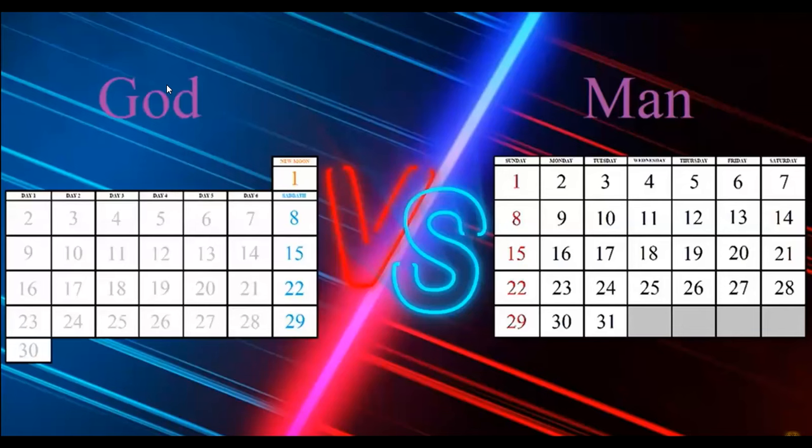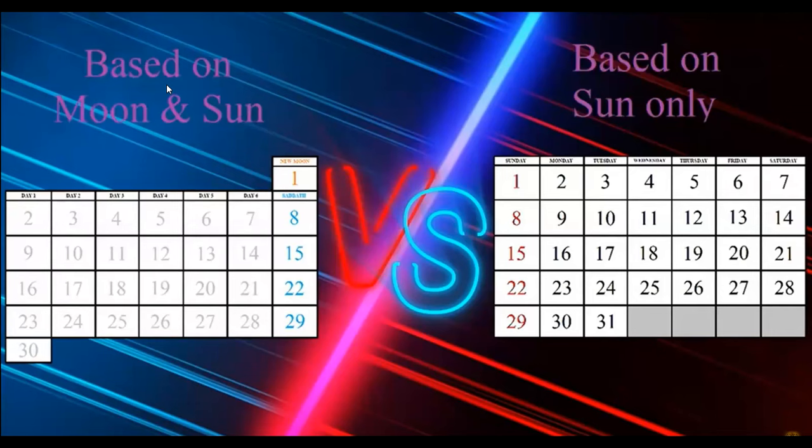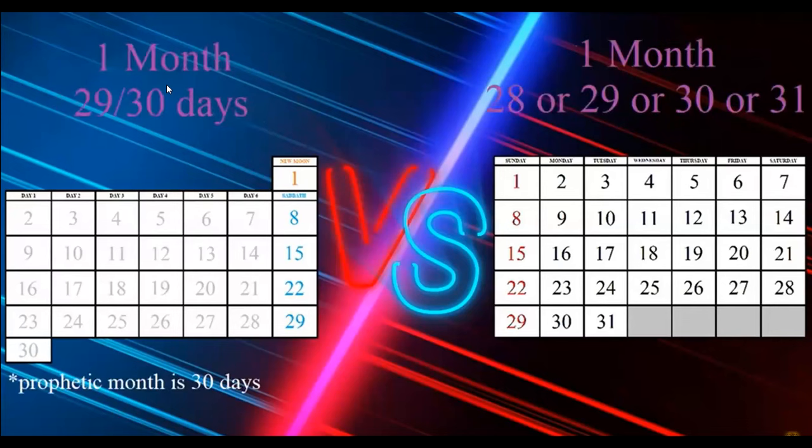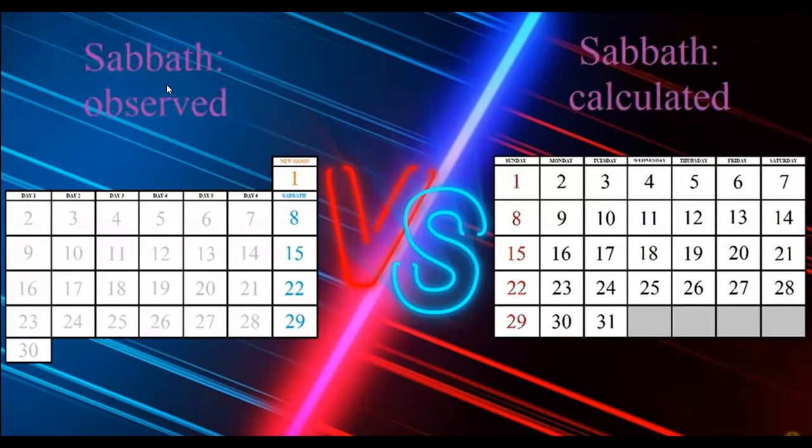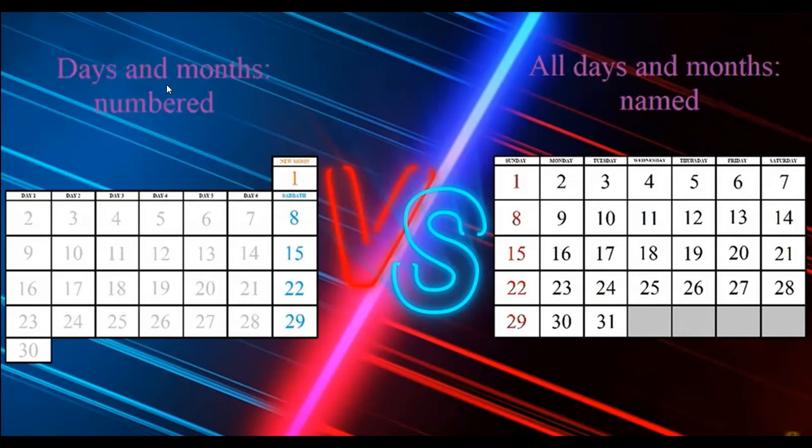Now what I would like you to do is make a choice: do you follow what God created or what men fabricated? Lunisolar calendar comes directly from the Bible while Gregorian simply does not. Biblical calendar is based on moon and sun, but Gregorian calendar is only synchronized with the sun. Biblical month has 29 or 30 days, but Gregorian month can have up to four different lengths. Lunar month always starts from new moon, while first day of the month in pagan calendar is based on nothing.